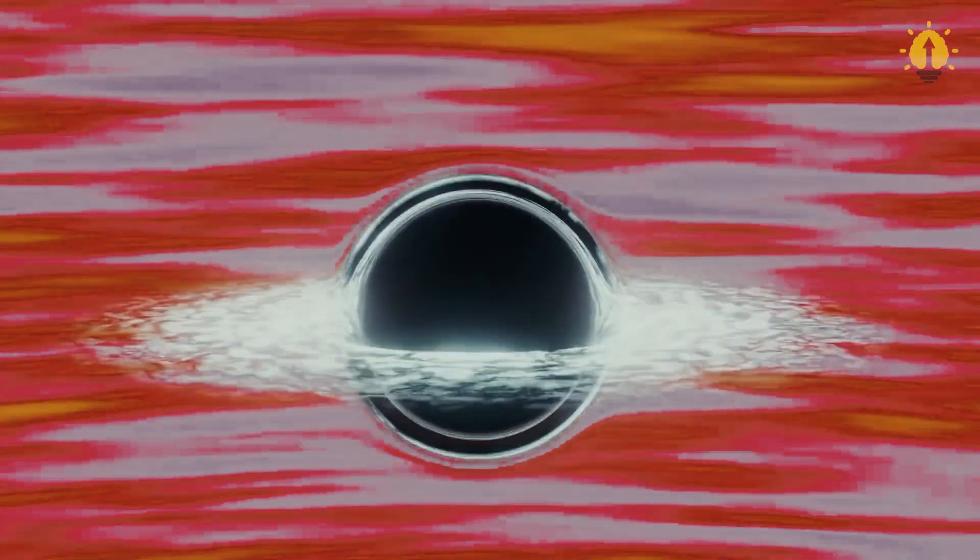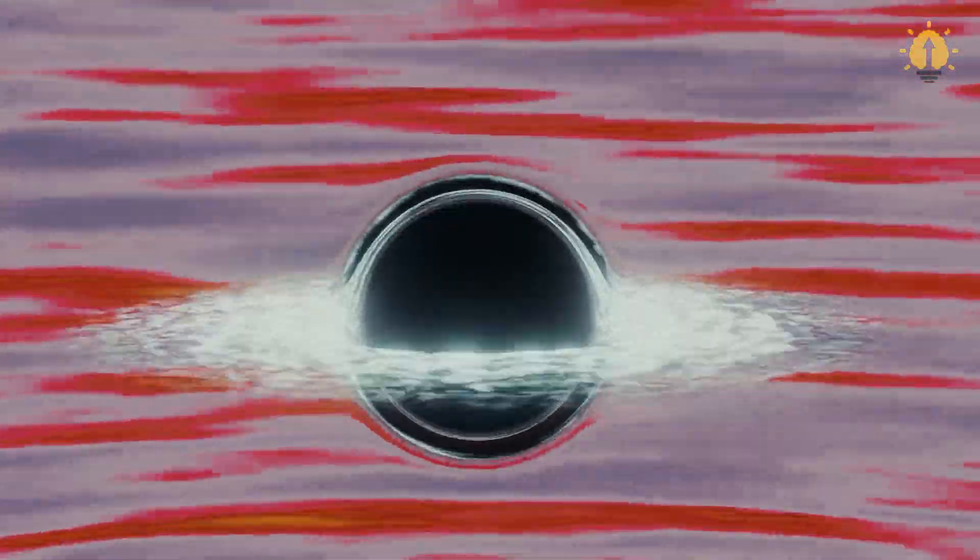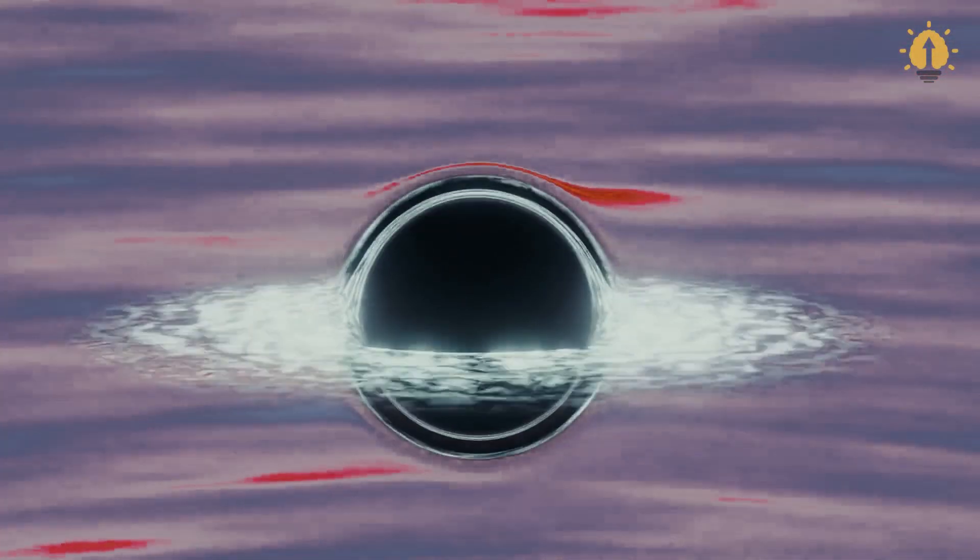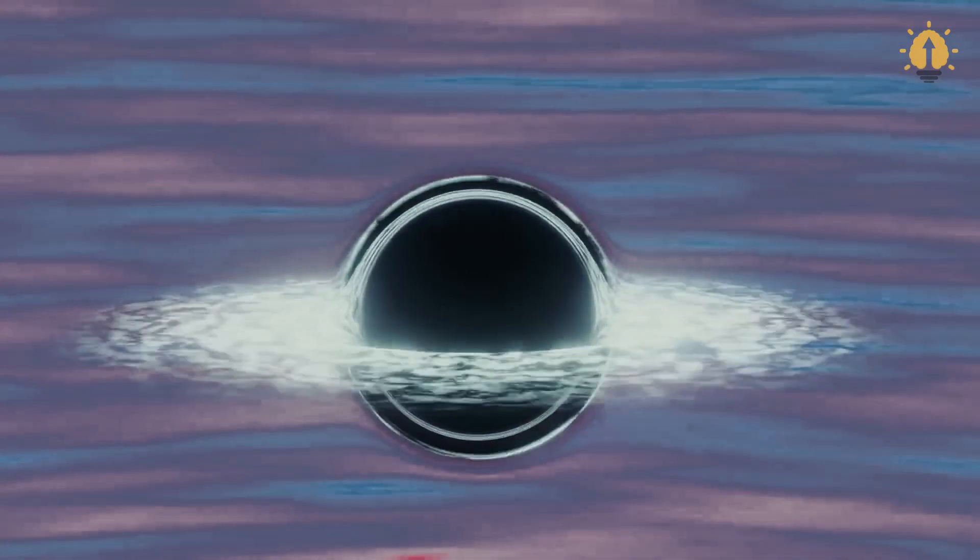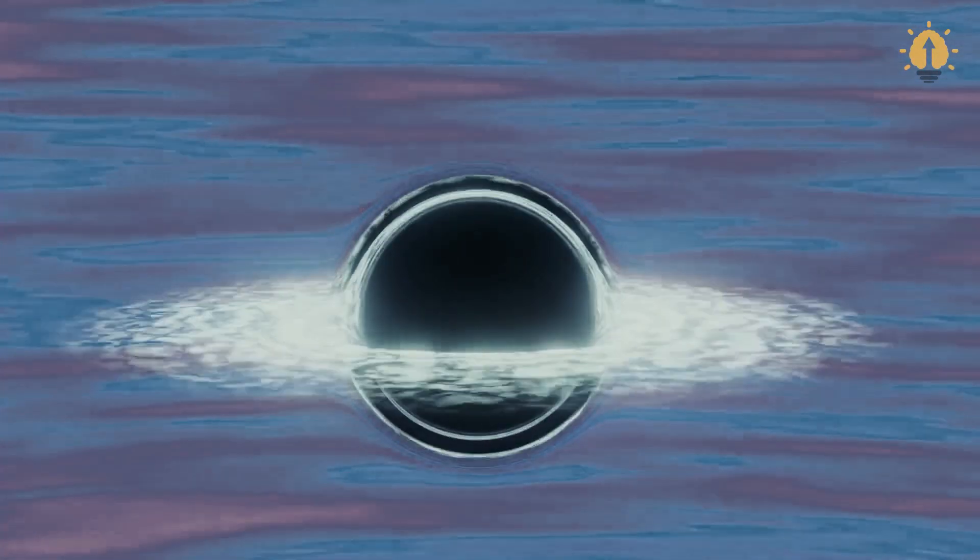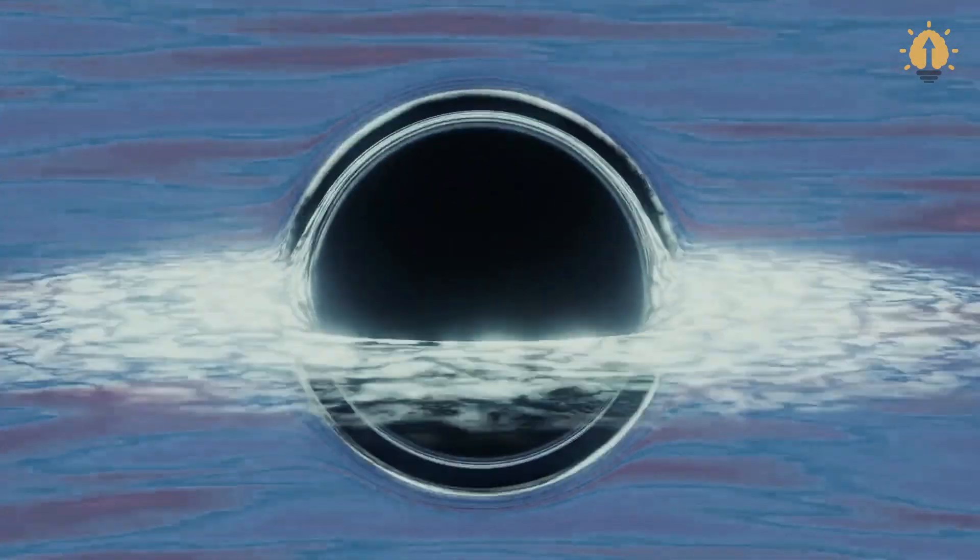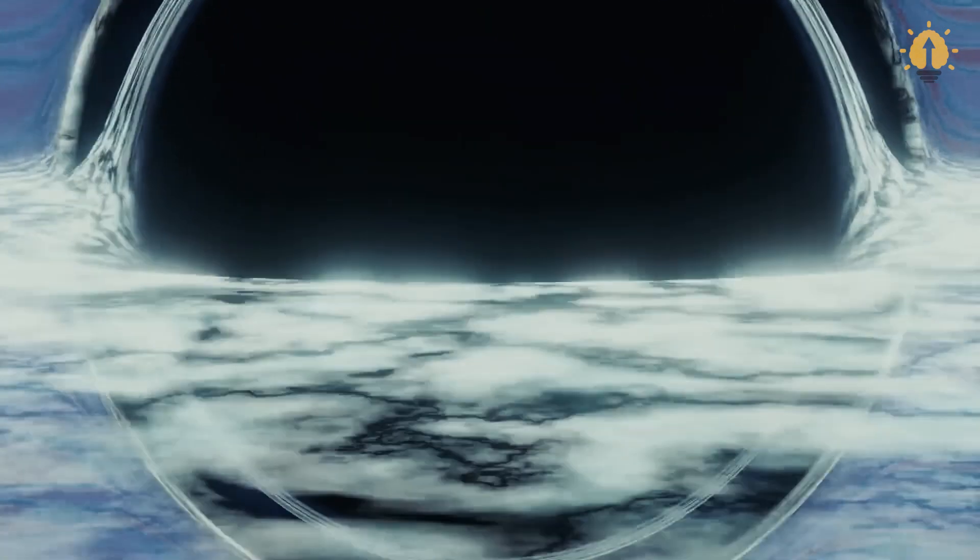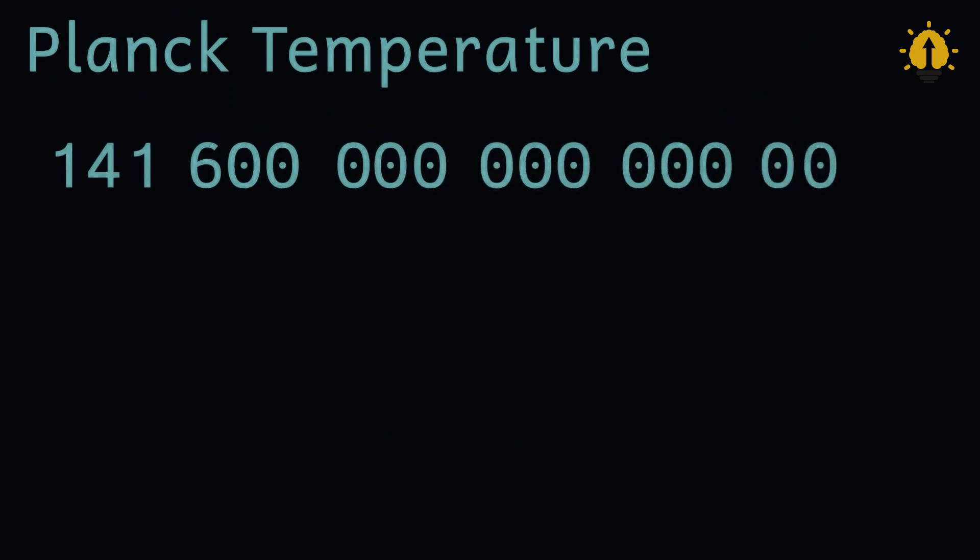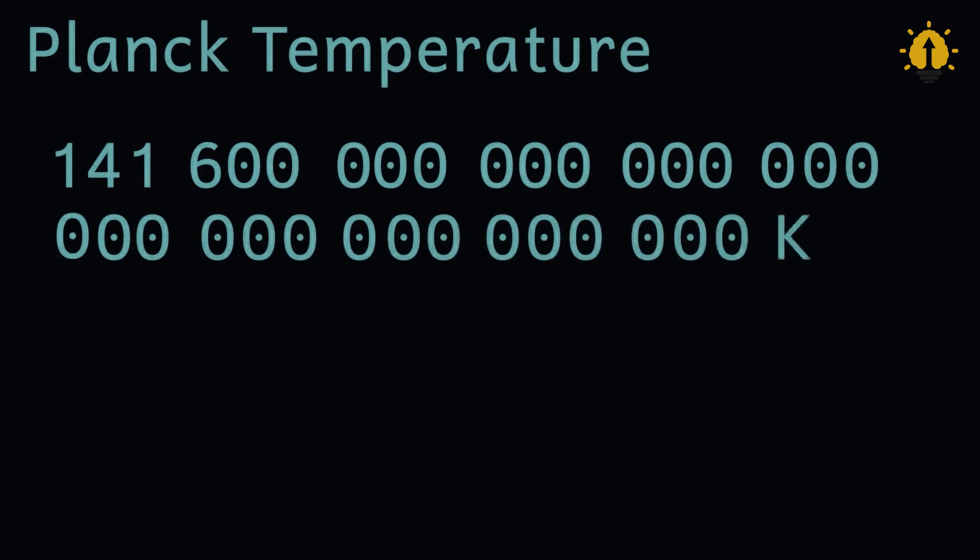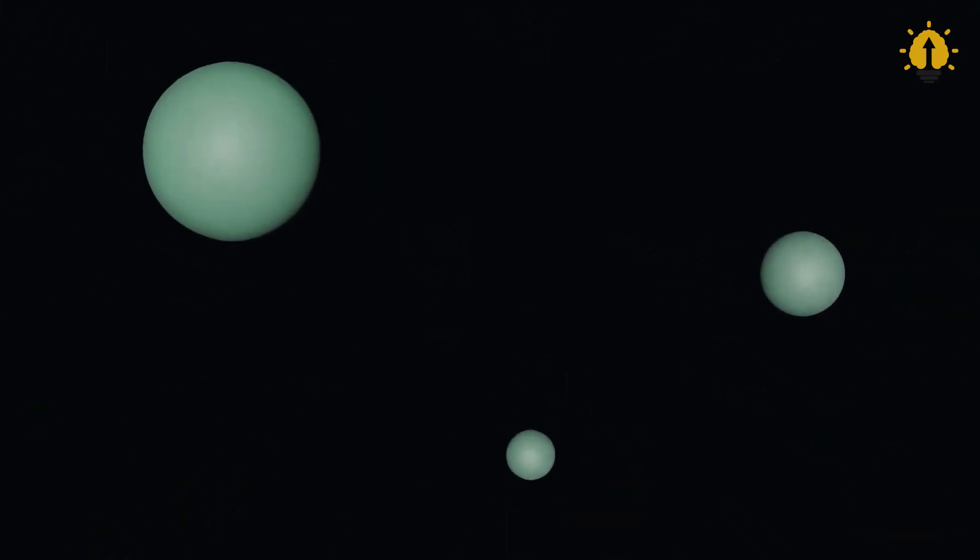But even this extreme temperature isn't the end of the story. In today's video, we're introducing a mind-bending concept, the Planck temperature, also known as the Absolute Hot. This is the highest temperature theoretically possible in the universe. Its value is an incredible 1.417 times 10 to the power 32 degrees Celsius, which is 1 decillion 417 nonillion degrees Celsius.